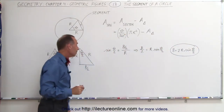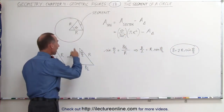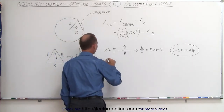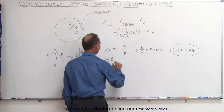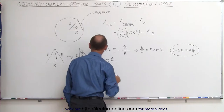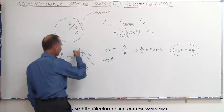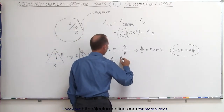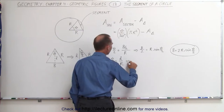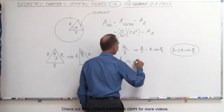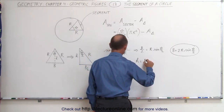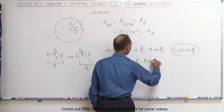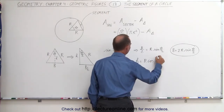We can do the same to find the height of the triangle. The cosine of theta divided by 2 equals the adjacent side over the hypotenuse, which is h over r. This means h is equal to r times the cosine of theta divided by 2.